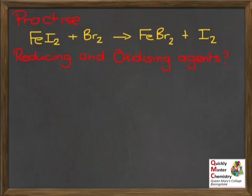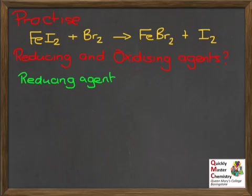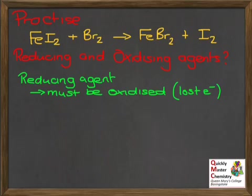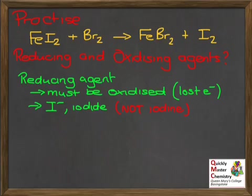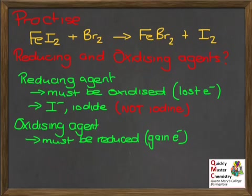As a final question, here's an equation to look at: what is the oxidizing agent and what is the reducing agent? The reducing agent must be the thing that's being oxidized — losing electrons — and in this case it's the iodide ions in the iron(II) iodide. Note: it's not the element iodine, it's iodide ions in a compound. The oxidizing agent must be the thing that is itself being reduced — gaining electrons — and that's the bromine going to bromide ions.